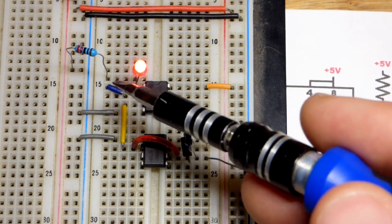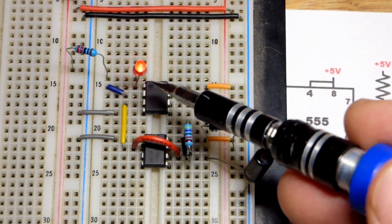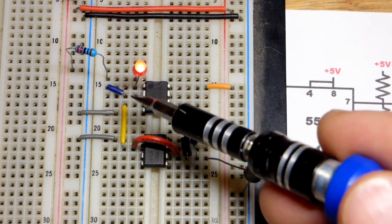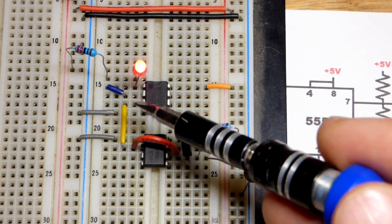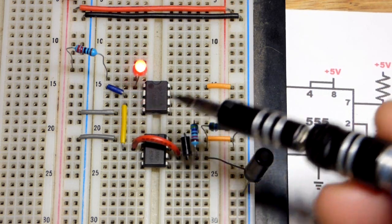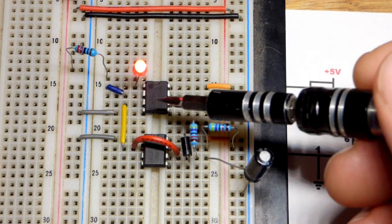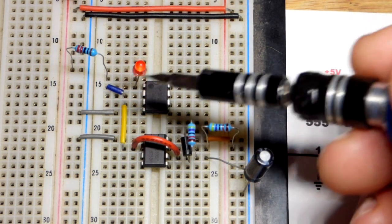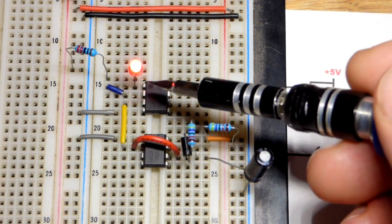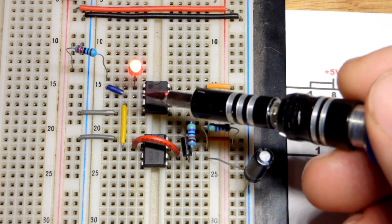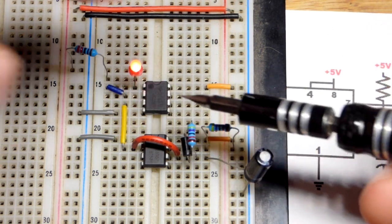That's the inverting input. We have the output of the op amp though has to go to the inverting input in order to set the output to the same voltage that we have at the non-inverting input. The output always wants to be like the non-inverting input. It's not always the same voltage but it wants to keep these two the same voltage when there's negative feedback.